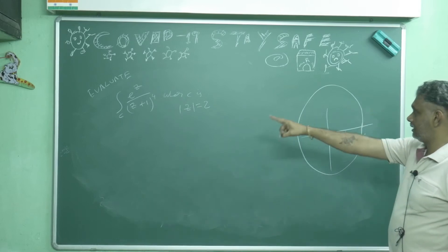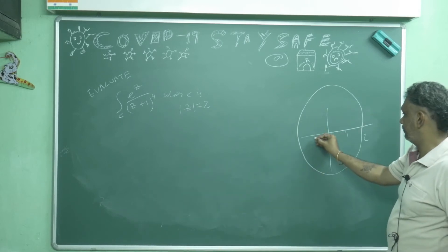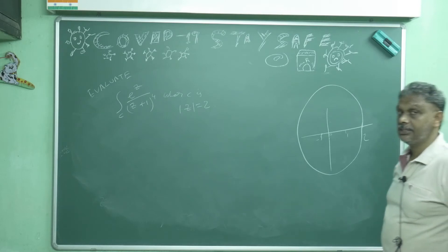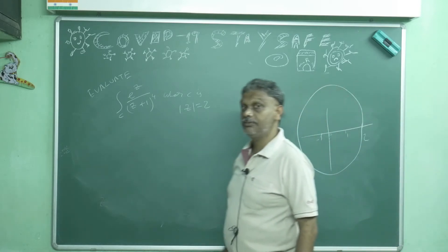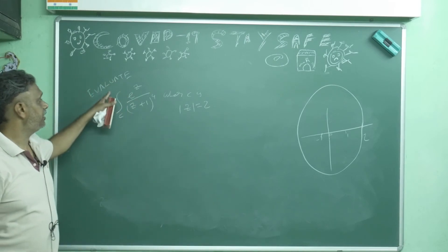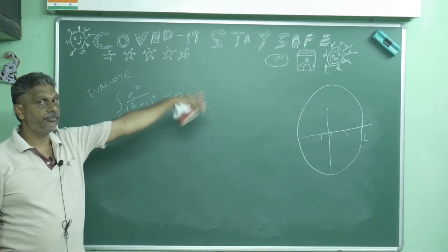Now that is z is equal to minus 1. Minus 1 is inside c. So how many times is it repeating? 4 times. So 3 times you have to derive it and divide it by 3 factorial. Now 1 by 2 pi i is there, so multiply by 2 pi i.